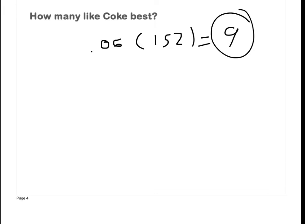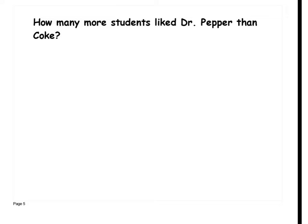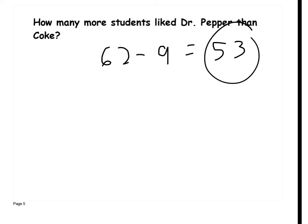If you did this for every drink, what would they add up to? 152. If they don't, then you did something wrong. How many more students like Dr. Pepper than Coke? How many students like Dr. Pepper? 62. How many like Coke? Nine. So 62 minus 9 is 53 — 53 more students like Dr. Pepper than Coke.